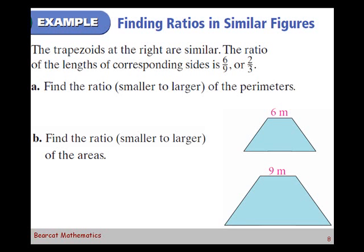It says if we look at the ratio of the lengths of their corresponding sides, there would be 6 to 9. We can see the 6 on the top one and the 9 on the lower one. So we've got a ratio of 6 to 9. 6 to 9 reduces down to 2 to 3. Let's divide a 3 out of the 6 and divide a 3 out of 9 and you get 2 to 3.